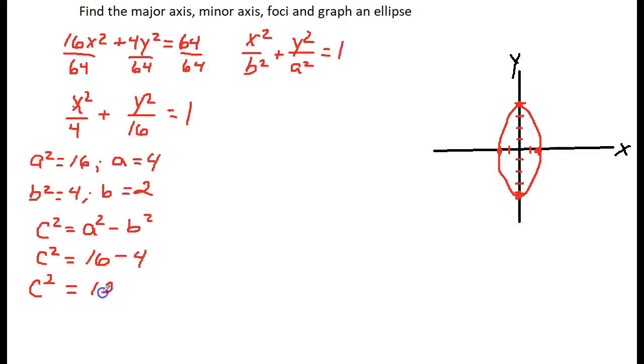So c squared is equal to 16 minus 4, which is 12, and that means that c will be the square root of 12. If we just take a calculator and evaluate the square root of 12, I get roughly 3.46, which rounds to 3.5, so approximately 3.5 units.